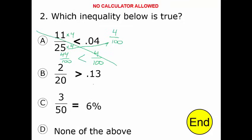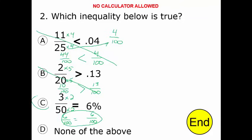We need to do the same strategy for the next statement, working a little more quickly. We get 13 over 100. Then taking times 5 over 5, we get 10 over 100. Is 10 over 100 greater than 13 over 100? No. So we've eliminated two choices. Here, 6% is actually 6 out of 100. To get this to hundredths, we take it times 2 over 2, we get 6 over 100 equals — hey, look at that. We've found our choice.